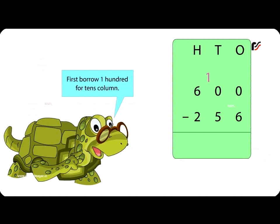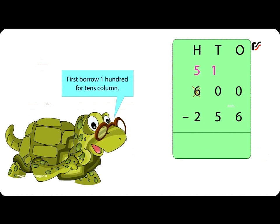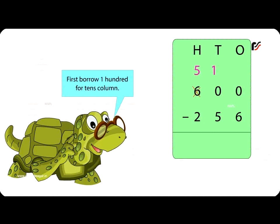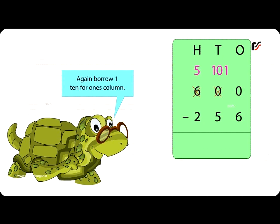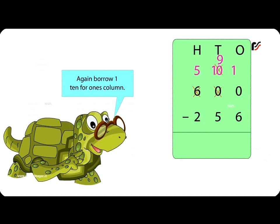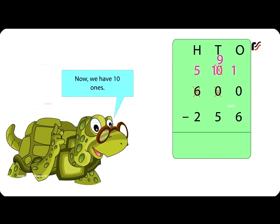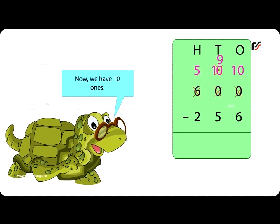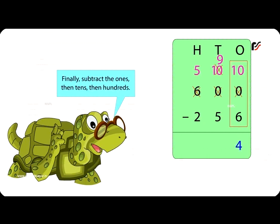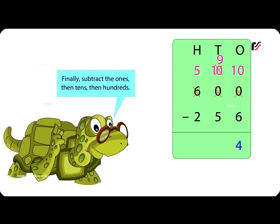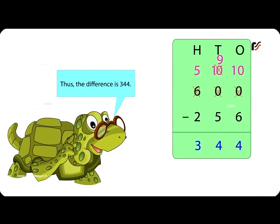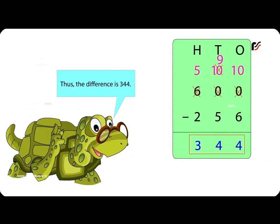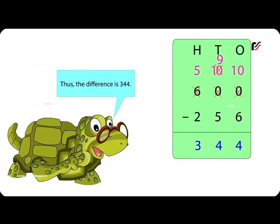First, borrow one hundred for the tens column — now we have ten tens. Again, borrow one ten for the ones column — now we have ten ones. Finally, subtract the ones, then tens, then hundreds. Thus, the difference is 344.